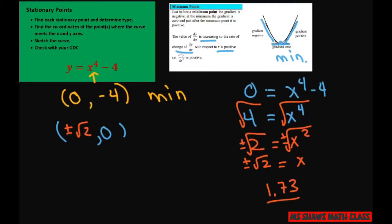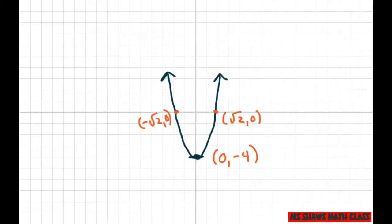So when you graph it, and I already graphed it here, and it looks like this. It's kind of flat in here. And you can also check with your graphing calculator. And this is your minimum point. That's it. Thank you. Have a nice day. Bye-bye.